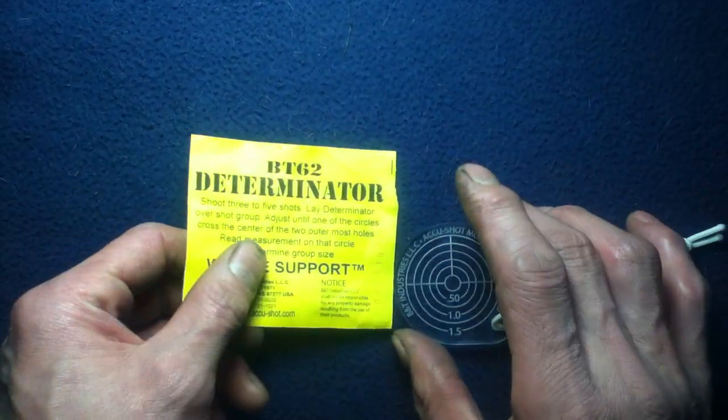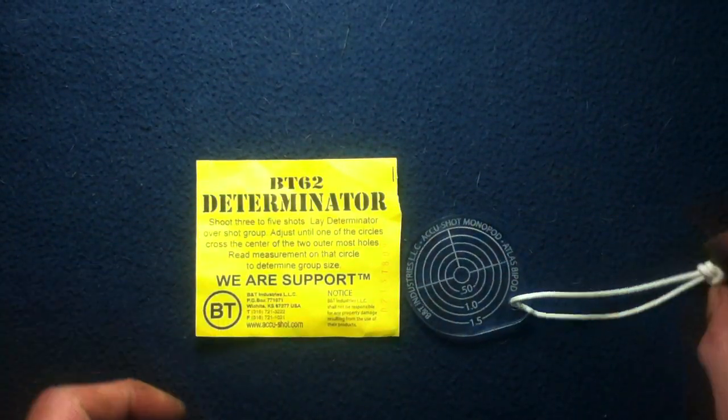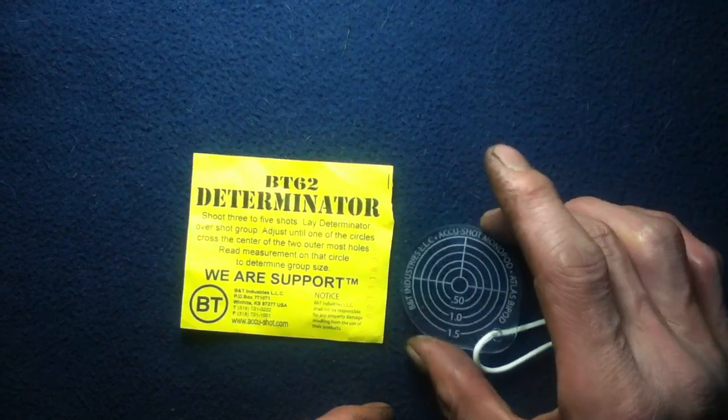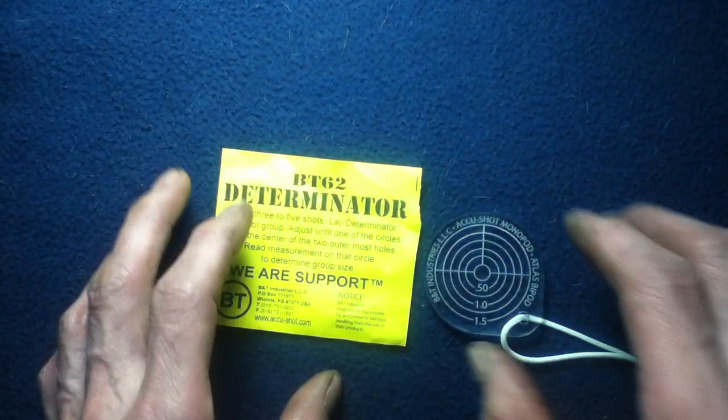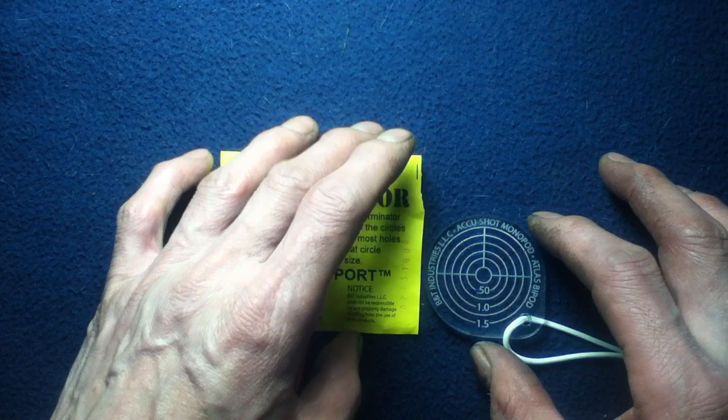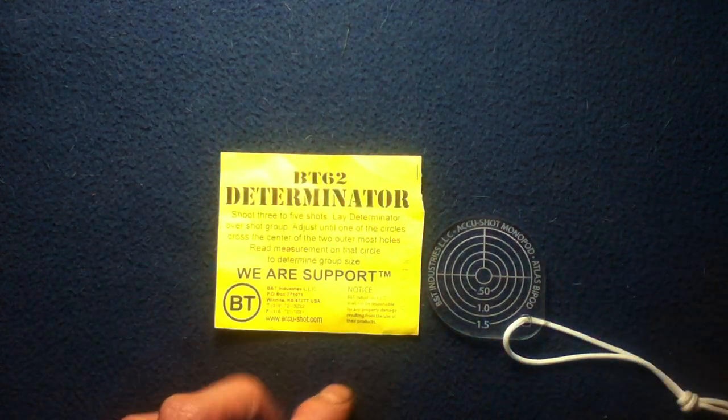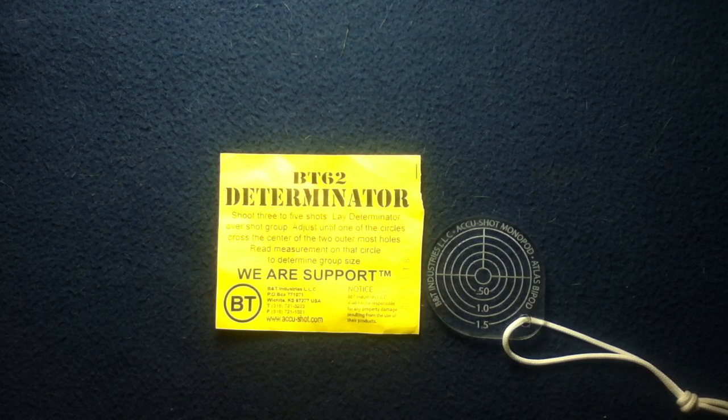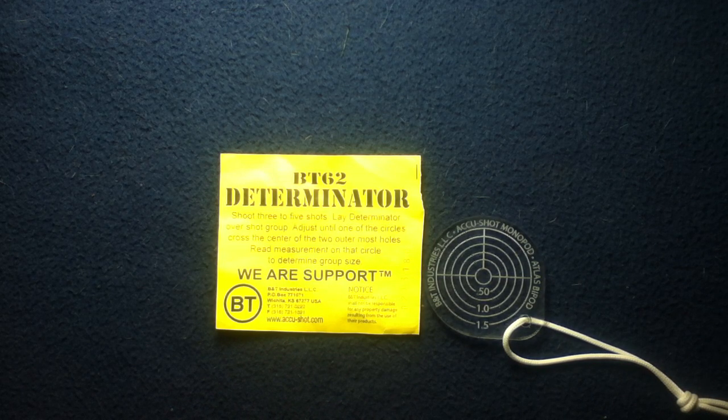So again, we're just taking a quick look at the BT-62 from B&T Industries, makers of the AccuShot monopod and the Atlas bipod. But this is what was issued as the Determinator, now also known as the Groupie. So check them out.